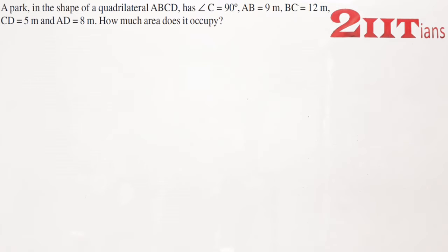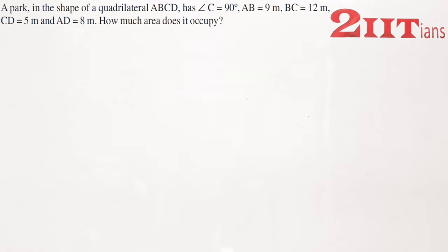The park is in the shape of quadrilateral ABCD, has angle C equals 90 degrees, AB equals 9 meters, BC equals 10 meters, CD equals 5 meters, AD equals 8 meters. How much area does it occupy?